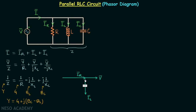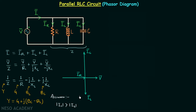IC phasor will lead the voltage phasor by 90 degrees because it is the current through the capacitor. While plotting IC phasor and IL phasor I have assumed that the magnitude of IC is greater than the magnitude of IL. These two vectors are in the same line but their heads are in opposite directions. Since IC has the greater magnitude, the resultant vector will point in the direction of IC with magnitude equal to IC minus IL.